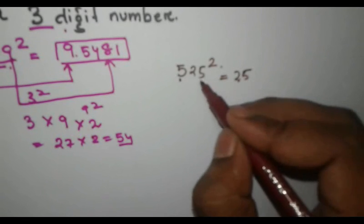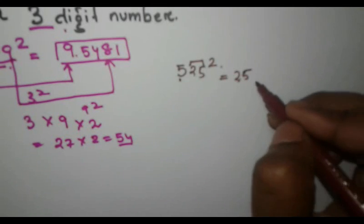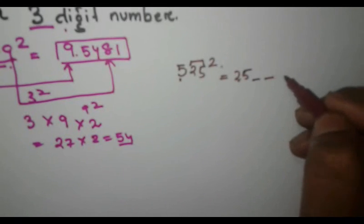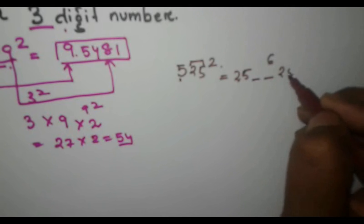Then next, what you have to do? We have to take 25 as a whole. So 25 square is 625. We have to leave 2 spaces and you have to write the 6 over here and 25 over here.